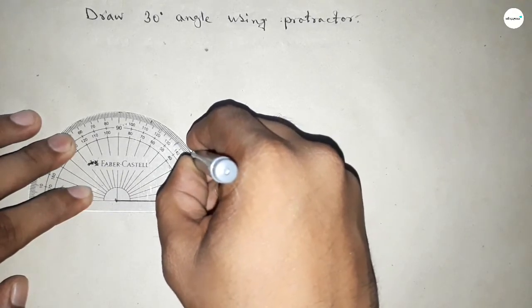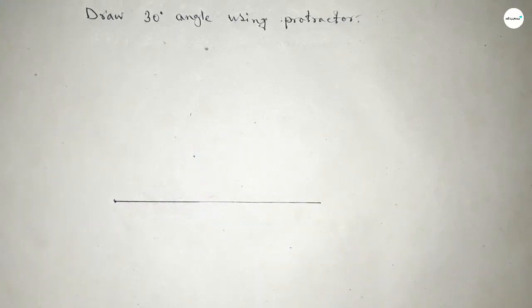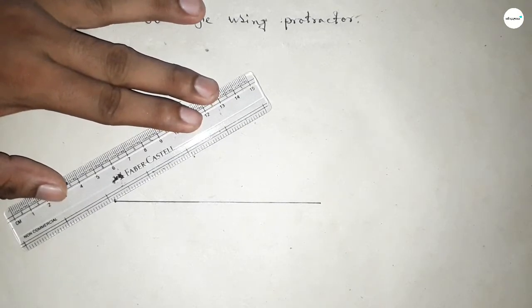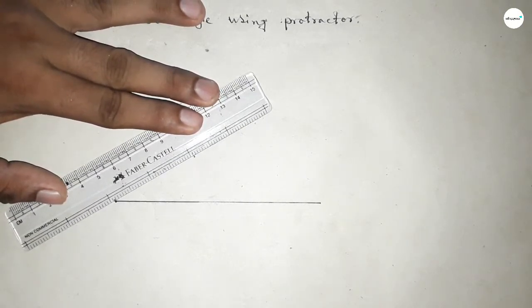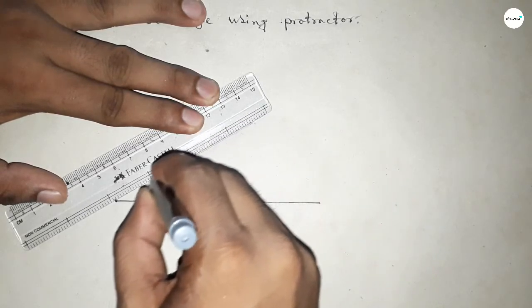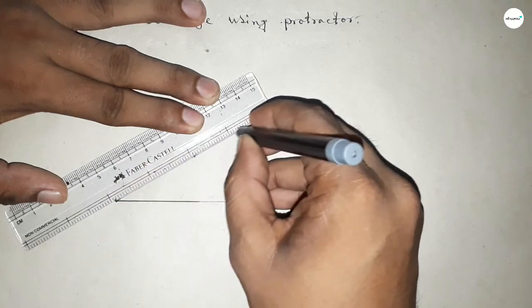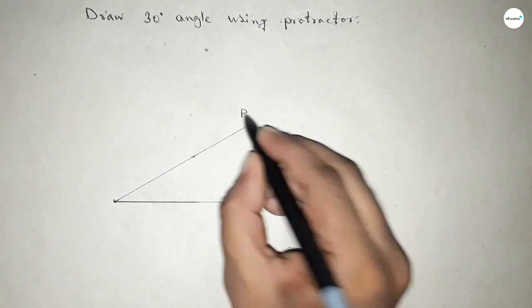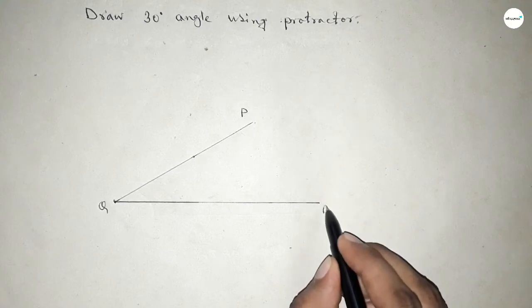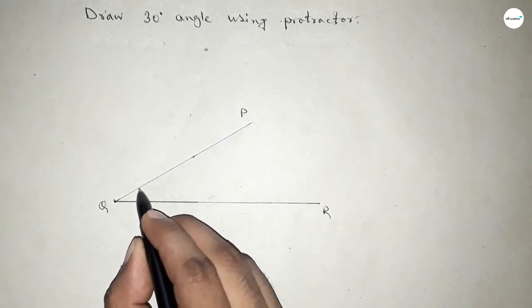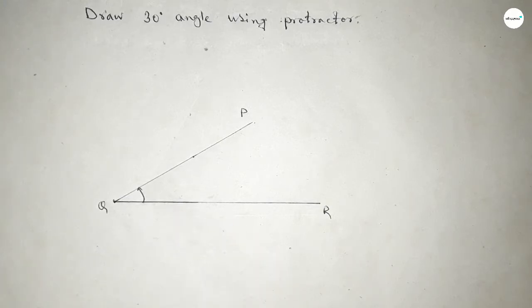Okay, now joining this side to get the 30 degree angle. So we got 30 degree angle. This is P, Q, and R, so angle PQR is a 30 degree angle.